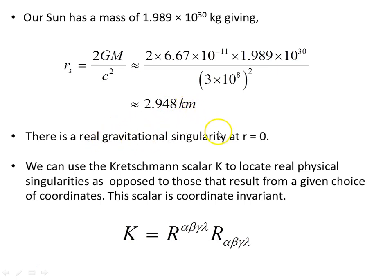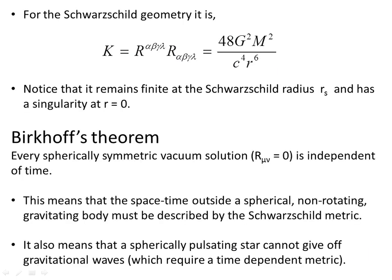Now there is a real gravitational singularity at r equals 0, and we will locate that shortly. We can use the Kretschmann scalar K to locate real physical singularities, as opposed to those that result from a given choice of coordinates. This scalar is coordinate invariant, and the Kretschmann scalar is given by this contraction of the Riemann tensor, which is rank 4.